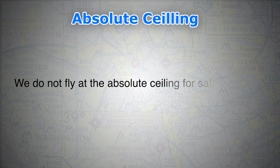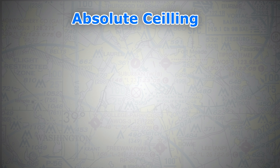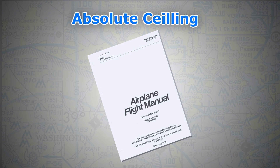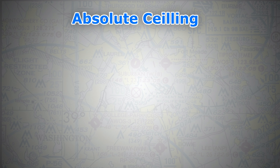A few things to keep in mind regarding the absolute ceiling: we don't actually fly at the absolute ceiling. It is normally tested by test pilots for the certification of the aircraft, meaning the aircraft is technically able to fly at this altitude. However, operationally — in day-to-day operations — we do not climb to such an altitude. If you want to figure out exactly what these altitudes are for your aircraft, the best place to look is the AFM, or Airplane Flight Manual, or the POH, the Pilot Operating Handbook, in the performance chapter.